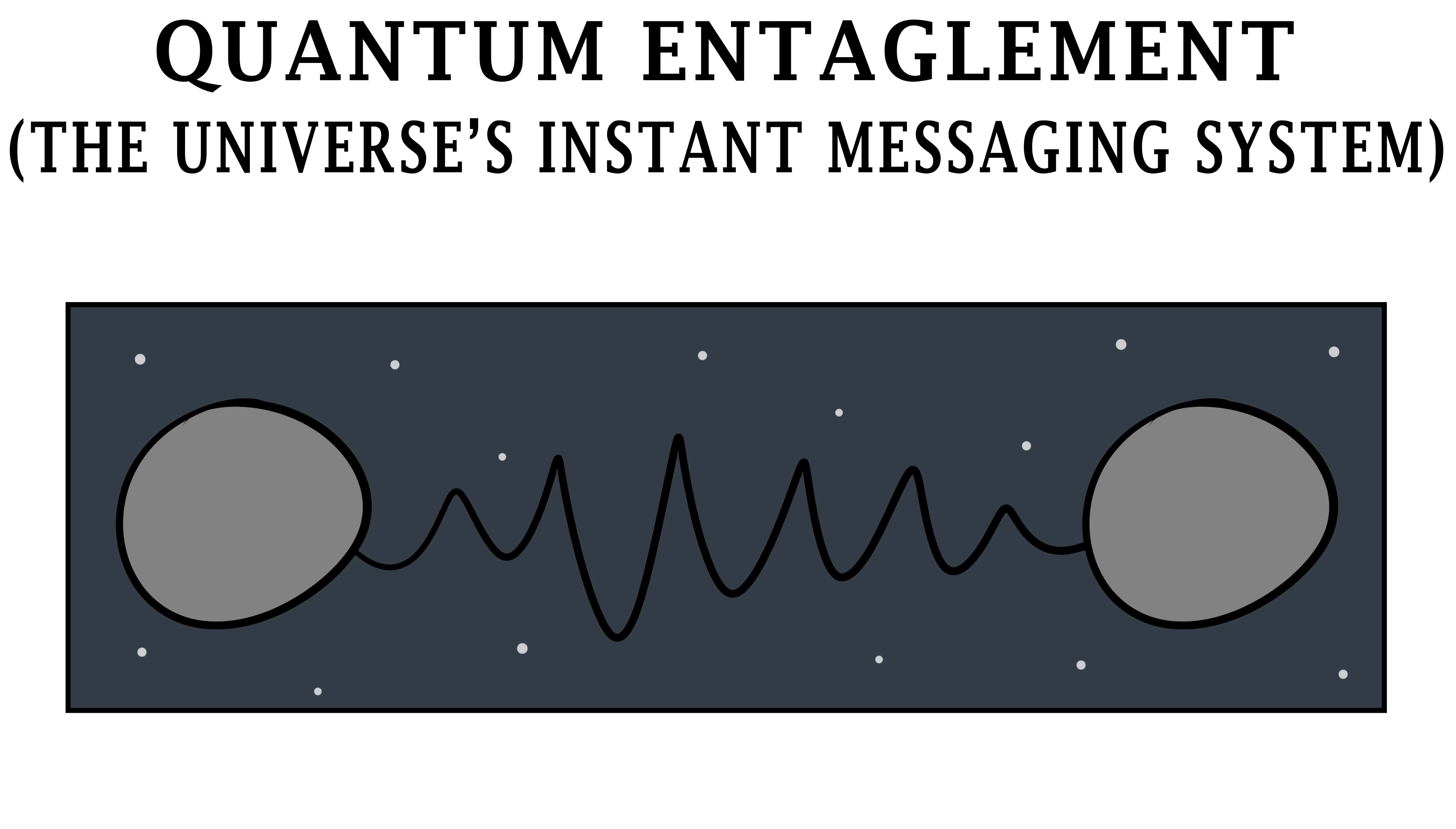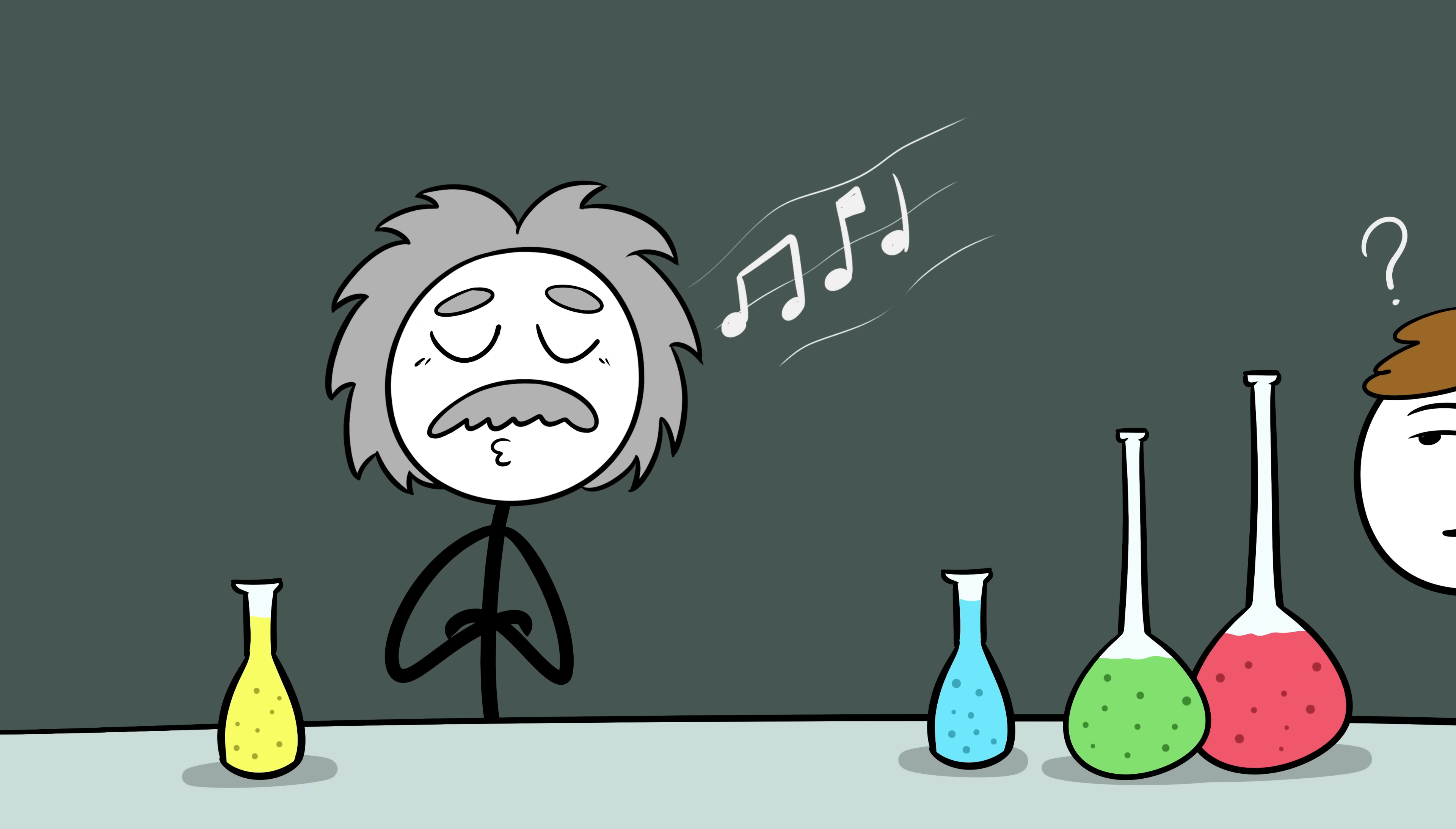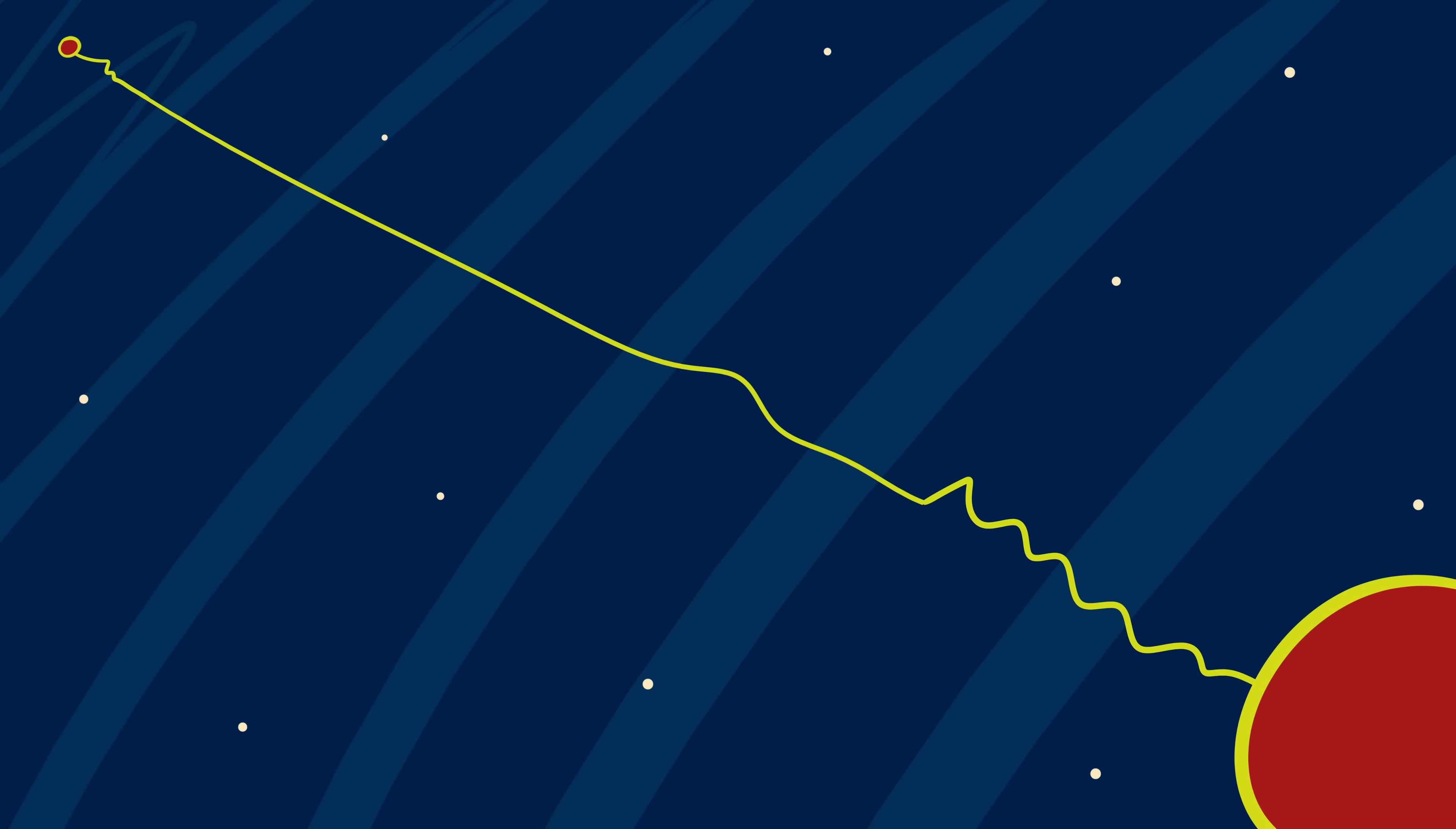Number six, quantum entanglement, the universe's instant messaging system. Einstein called it spooky action at a distance, and he wasn't joking. Quantum entanglement is when two particles become linked in such a way that the state of one instantly affects the other, no matter how far apart they are. You could separate them by light years, and still change one and the other reacts instantly. This shouldn't be possible. Nothing, not even information, should travel faster than light. But entanglement doesn't seem to care. Experiments have proven it again and again.